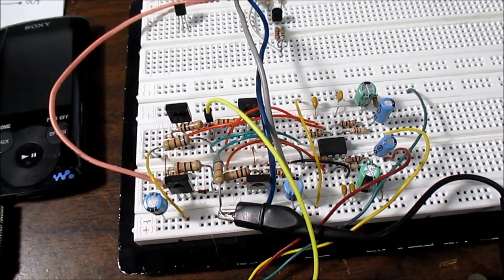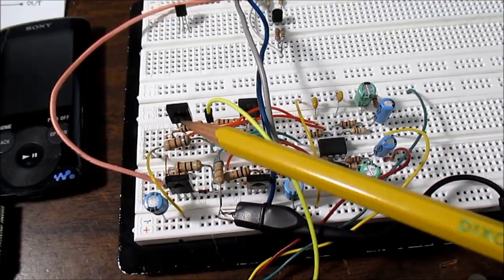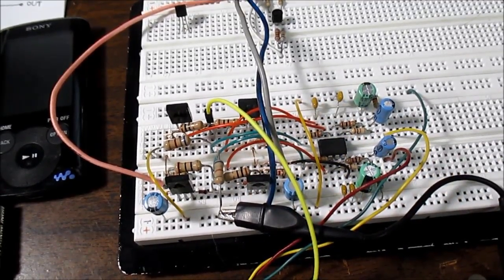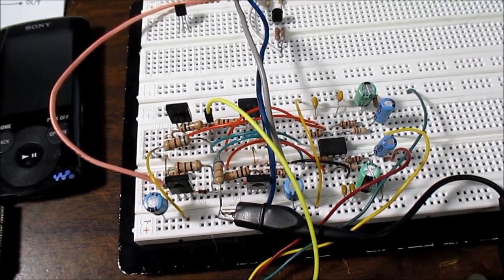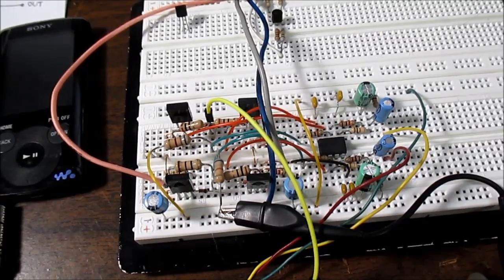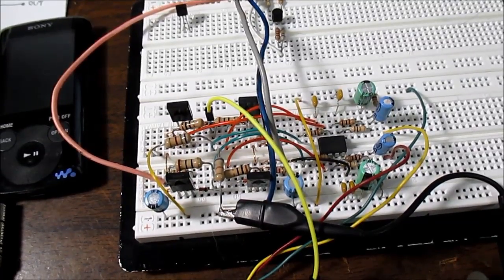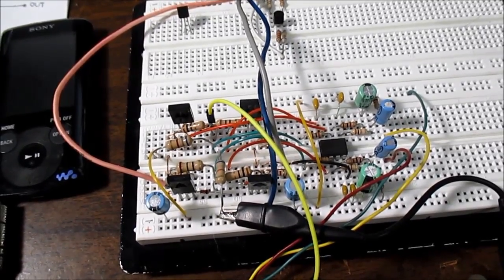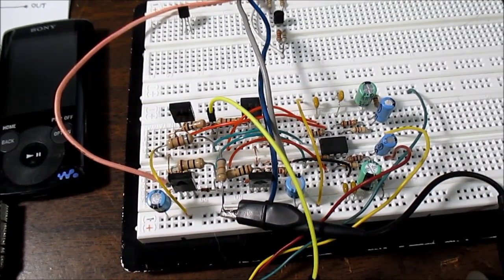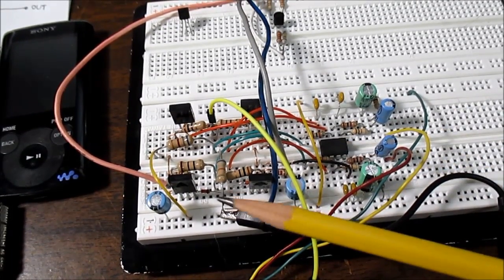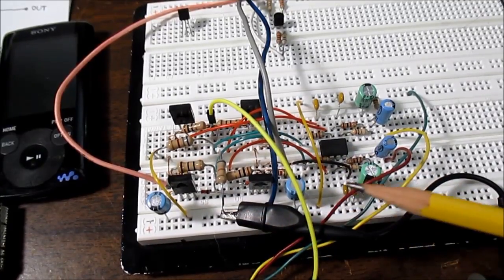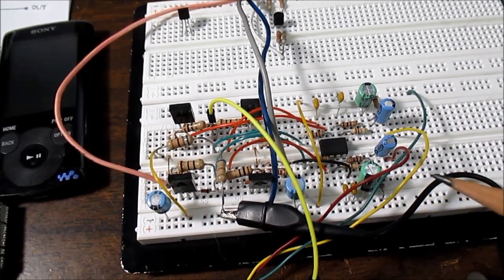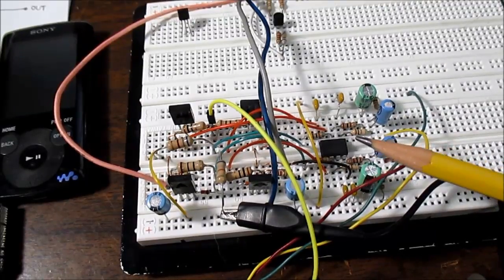Okay I'm set up on the scope here. I have 68 ohm loads on each channel, both channels driven. I'm using 68 ohms because that's roughly the impedance of my headphones. A lot of these higher-end headphones have really high impedance ratings, these are kind of on the lower end of that.